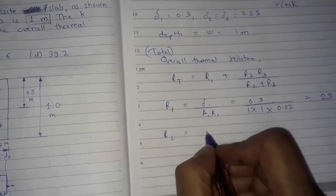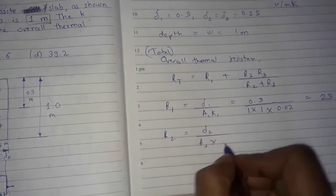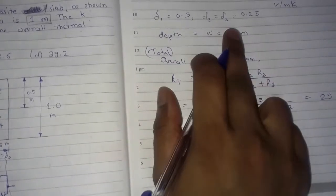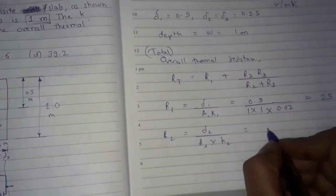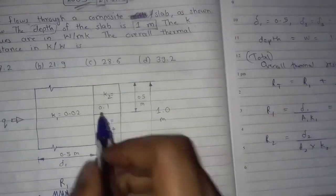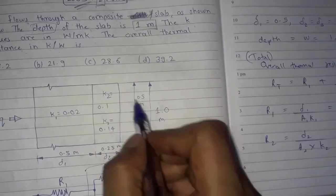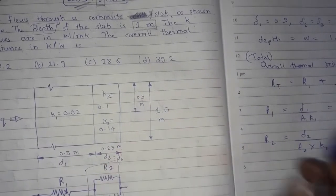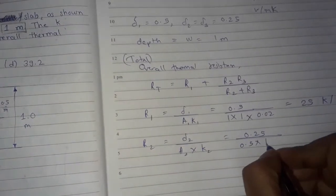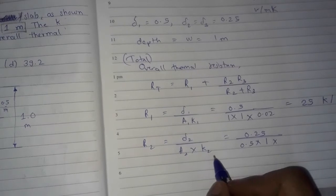Next we find R2, which equals δ2 divided by (A2 × k2). δ2 is 0.25 m. For A2, this side is 0.5 m and the depth is 1 meter, so A2 = 0.5 × 1 = 0.5 m².